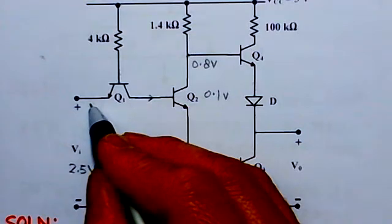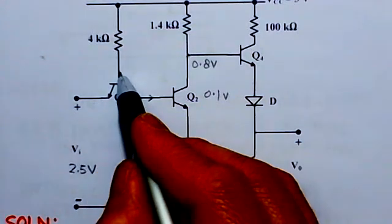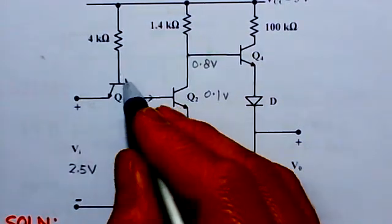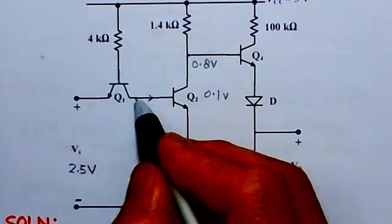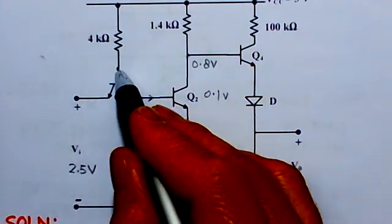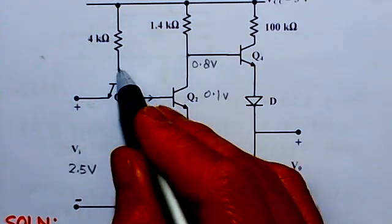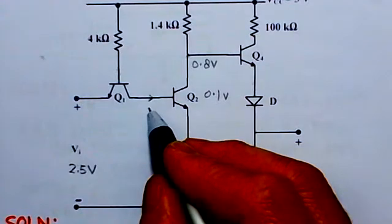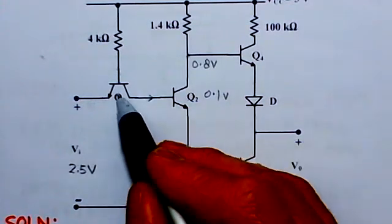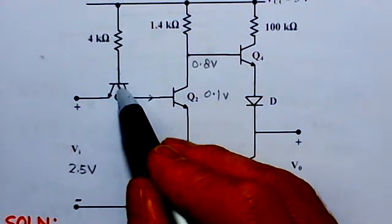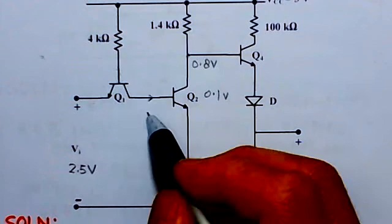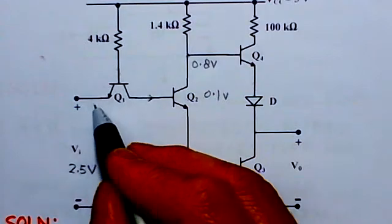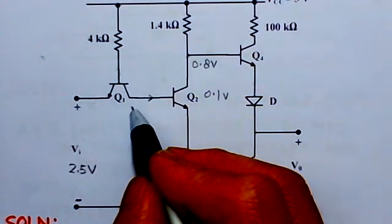Why is it reverse biased? Because the emitter is more positive compared to the base. So the other junction, the collector-base junction, is forward biased, because the base is positive with respect to the collector. So the collector-base junction is forward biased. This is the reverse active mode of the transistor. In normal active mode, the emitter-base junction is forward biased and the collector-base junction is reverse biased.